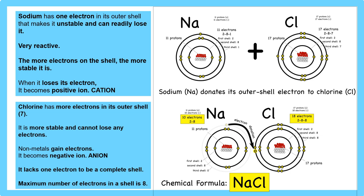A way to remember anion: if you cut onions they make you cry — so the negative ion makes you cry. Chlorine lacks one electron to complete its shell. For example, in a reaction between sodium and chlorine, sodium generously donates its electron to chlorine, and both sodium and chlorine become more stable.